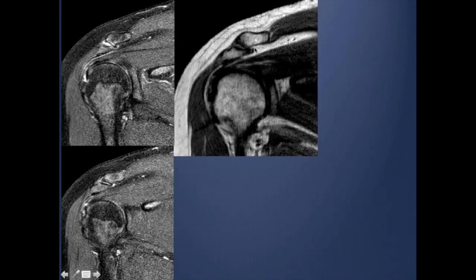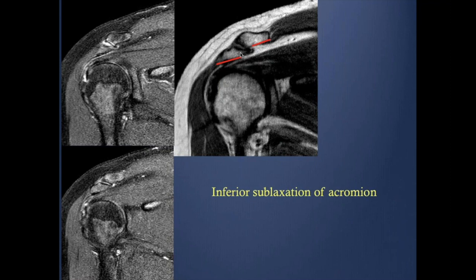The anterior part of the acromion is lower than the posterior part. Here you can see degenerative changes of the acromion. If you look carefully at the acromioclavicular joint, there is an offset — inferior subluxation — between the distal clavicle and the acromion. This is usually related to repetitive stress in weightlifters or previous trauma. We call it inferior offset or inferior subluxation of the acromion, which causes narrowing of the acromiohumeral interval and may result in impingement.